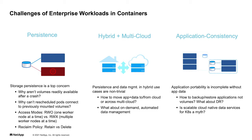Starting with data persistence — one of the main features of Kubernetes is the ability to scale up and scale down, which means we can destroy and redeploy pods. But if there's underlying data, we don't want to destroy the data along with the pod. So we need storage persistence within Kubernetes, ensuring that volumes on pods remain available even if the pod is destroyed and a new pod gets deployed on a different worker node.